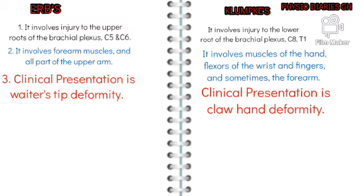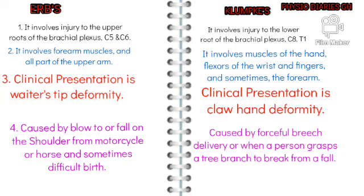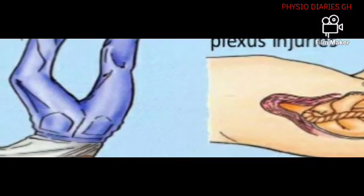With Erb's palsy, it is caused by a blow to or forceful depression of the shoulder, from a motorcycle or horse accident, and sometimes difficult births. With Klumpke's palsy, it can be caused by forceful breech delivery or when a person grasps a tree branch to break a fall from a height.